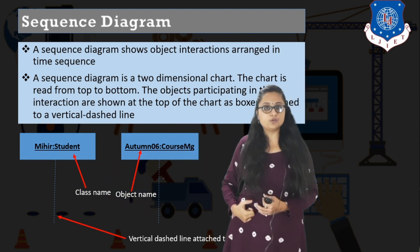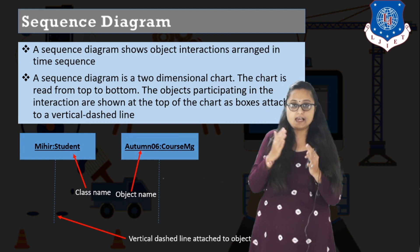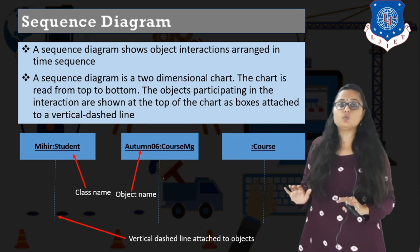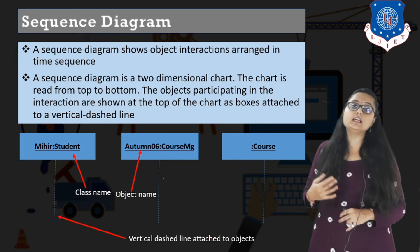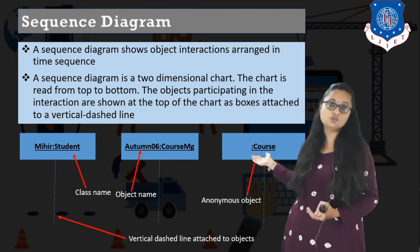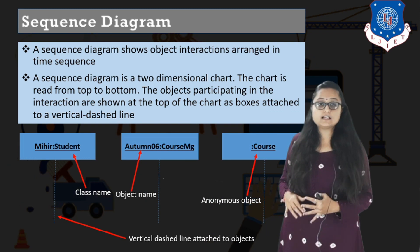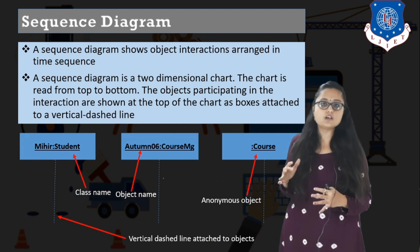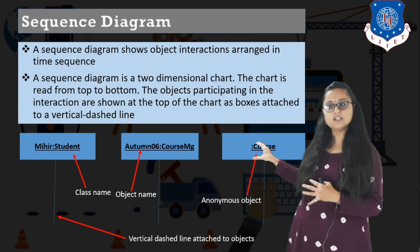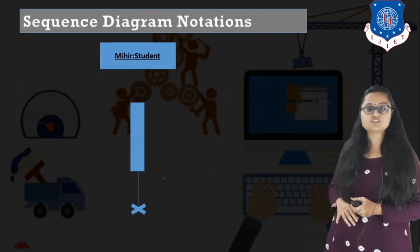For example, 'Mihir colon student' — Mihir is an object of the student class, so you write object name colon class name. If you don't know the object name and only know the class, you can write an anonymous object — skipping the object name. Similarly, if you only know the object name and not the class, you can skip the colon part and write only the object name. This is the basic symbol of sequence diagram.